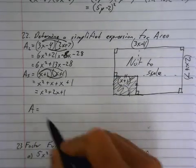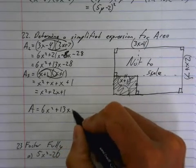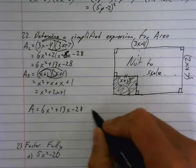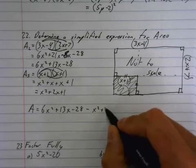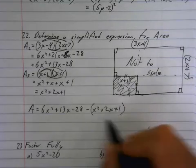And now, I need to actually subtract it, though. So, now, to get the full area, I'm going to do 6x squared plus 13x minus 28, and then I'm going to subtract x squared plus 2x plus 1. But, because I'm subtracting this whole polynomial, I need to put it in a bracket. I'm going to subtract everything in here...